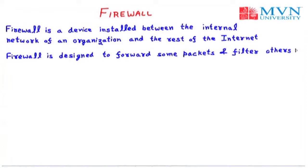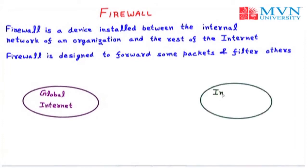To understand the firewall, let us take the example of a diagram in which we are having a global internet and an internal network separated by a firewall. The global internet is the part in which we are having all the people who are not part of the private network, and in the internal network we are having the specific people which are private to our own company or network. Between this global internet and the internal network, we are having a firewall.